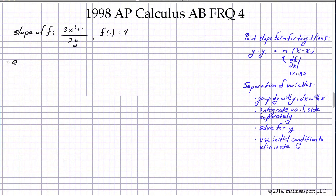So we can start with part A, which simply asks us to find the slope of the graph where x equals 1. The slope is in terms of both x and y, and so it's key that we use the fact that when x equals 1, y equals 4. We're going to write that the slope equals 3x squared plus 1 over 2y, evaluated at (1, 4).